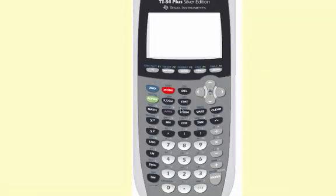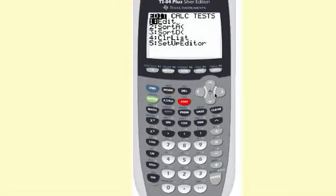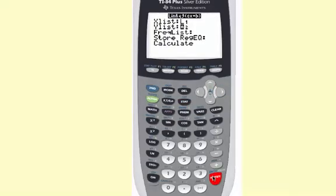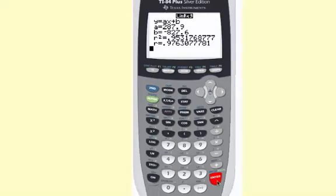So just for a comparison, let's look at a linear model. Stat, calc, and then linear regression which is 4. Okay, and you can see here the r squared value is 0.95, which is still really strong correlation.